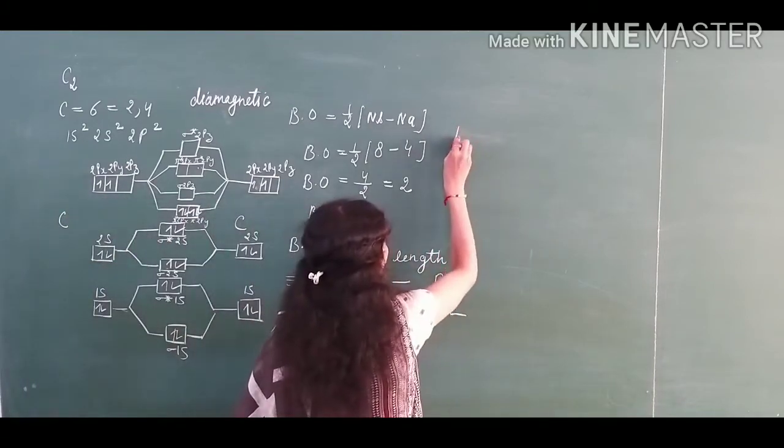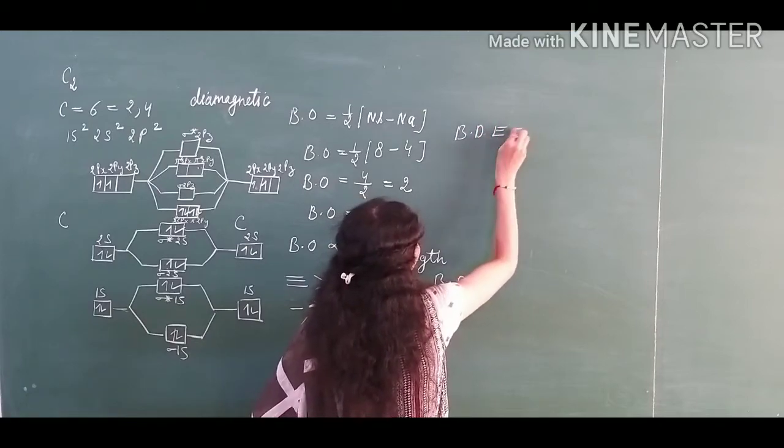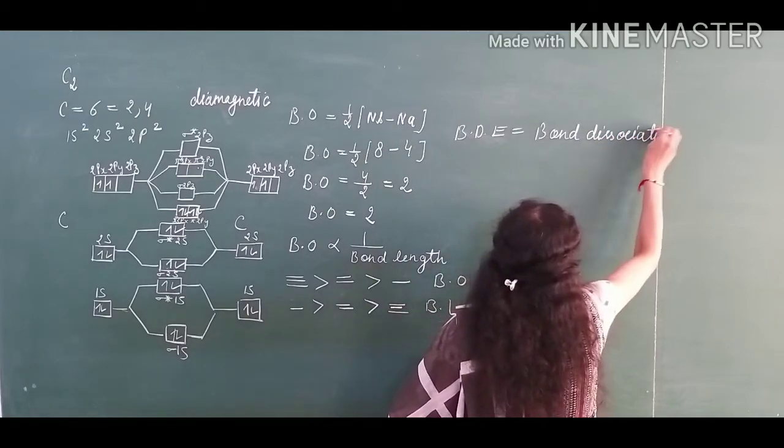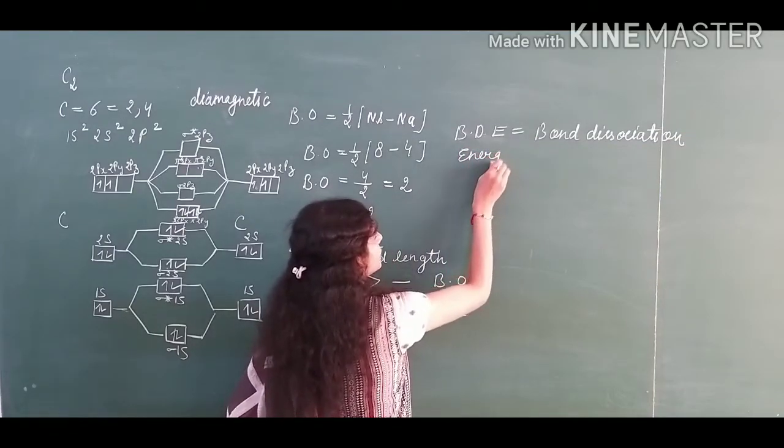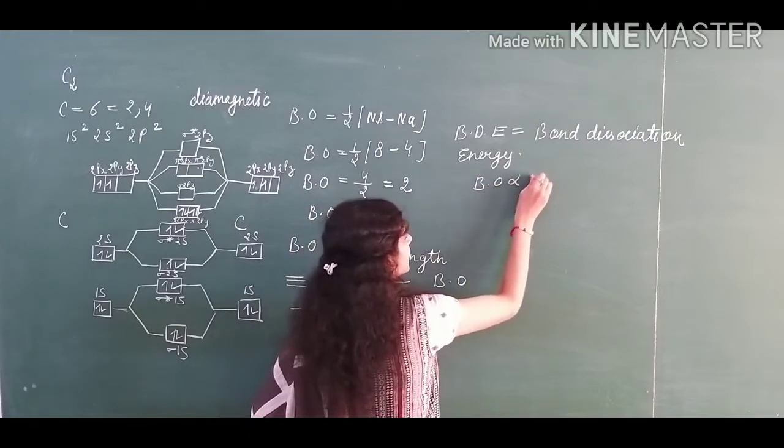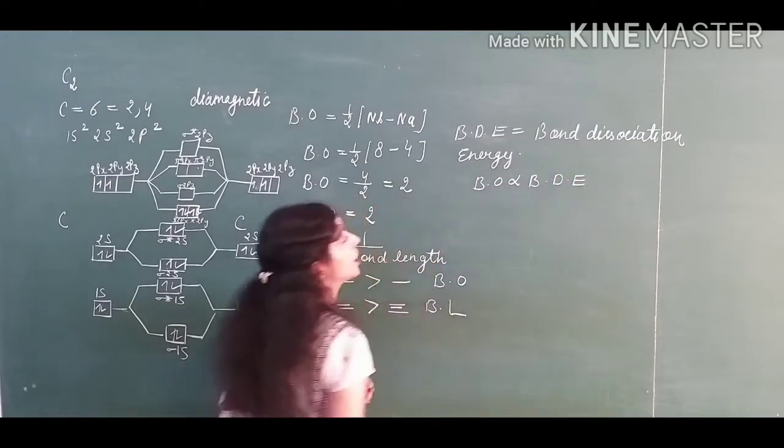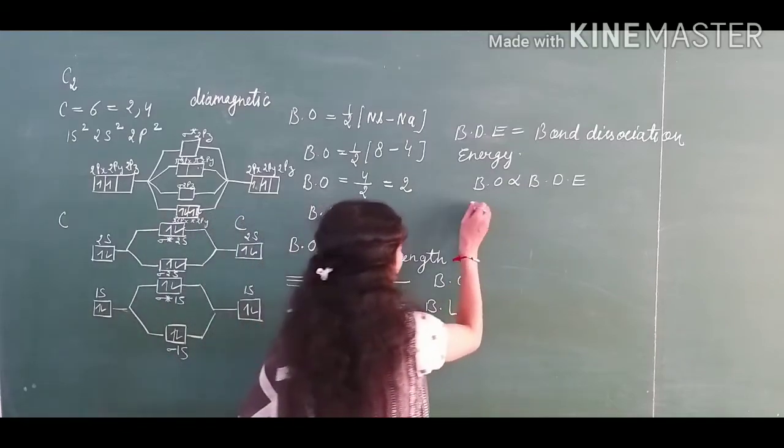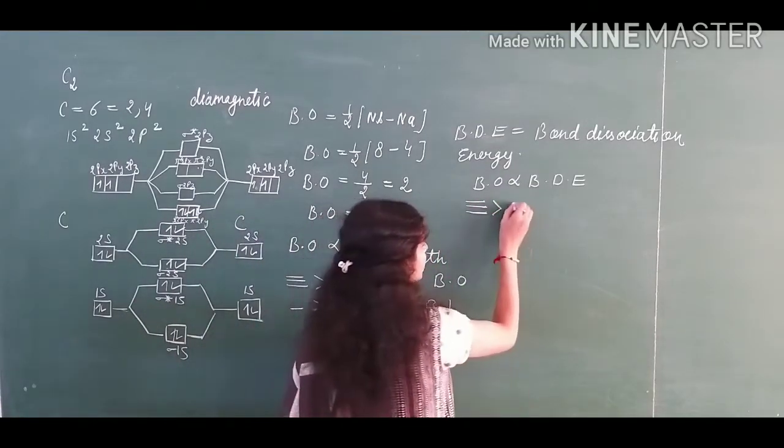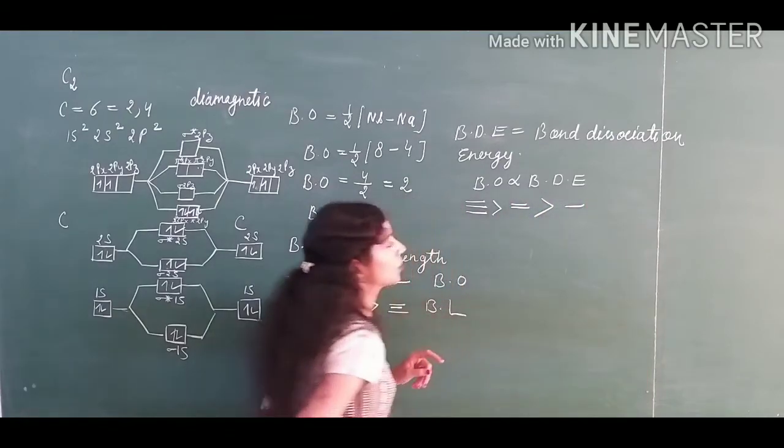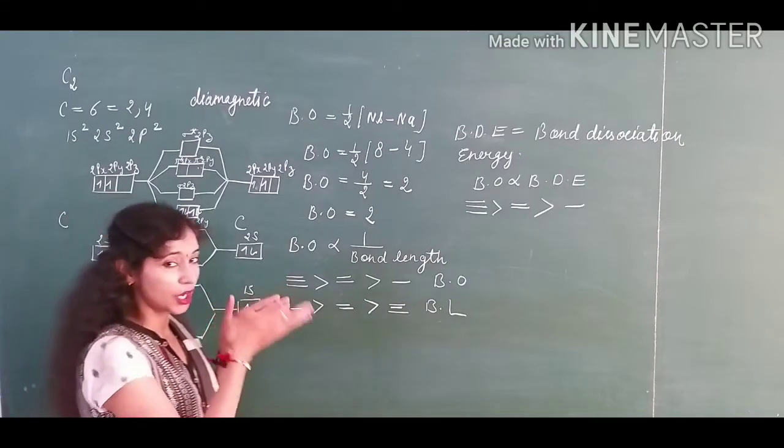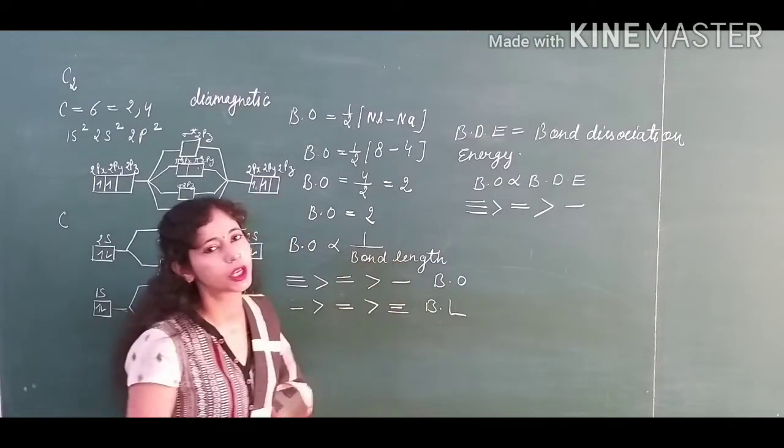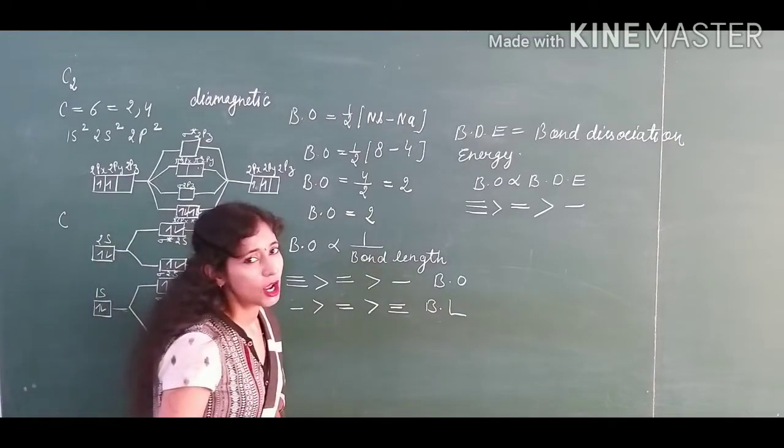Let's talk about the bond dissociation energy, BDE. Bond order is directly proportional to bond dissociation energy. So the molecule or ionic species that are having higher bond order, their bond dissociation energy will be the higher one. Triple bond will be having the higher bond dissociation energy, then double bond and single bond. If you have more sticks, you have to provide more energy for the breaking of the bond, so bond energy will be the higher one.